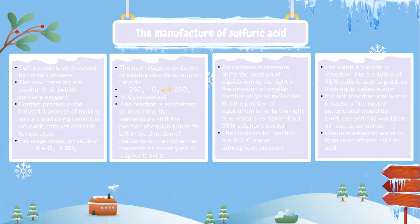The manufacture of sulfuric acid involves several steps. Sulfuric acid is synthesized by the contact process. The raw materials are sulfur and air, which contains oxygen. The contact process is the industrial process of making sulfuric acid using a vanadium(V) oxide catalyst and high temperature. The first stage involves oxidation of sulfur: S + O2 → SO2.